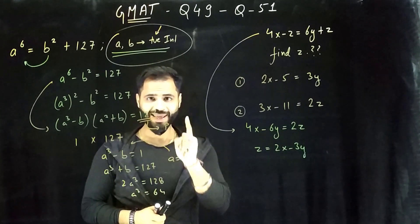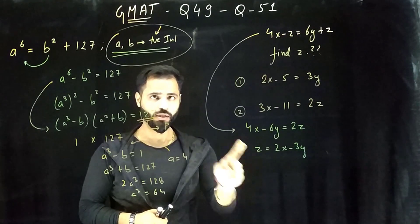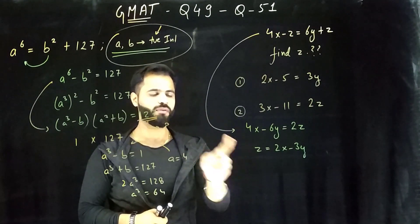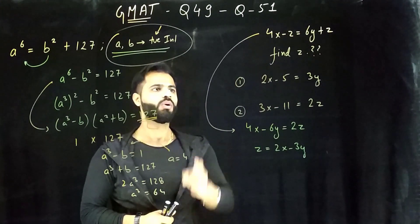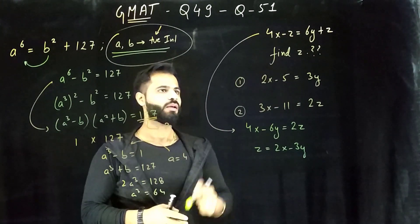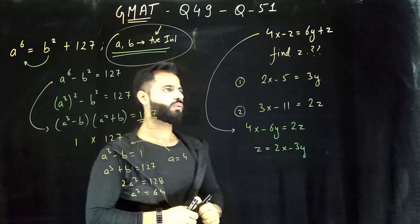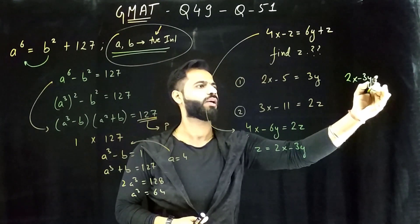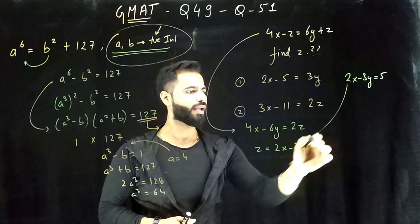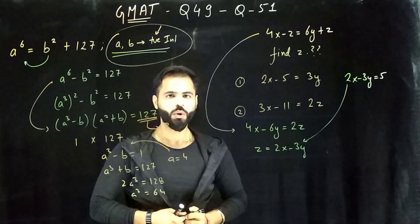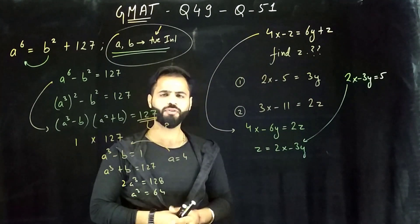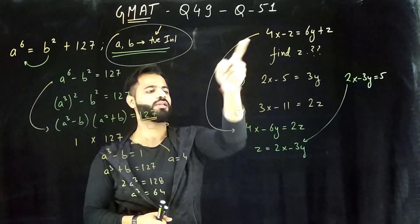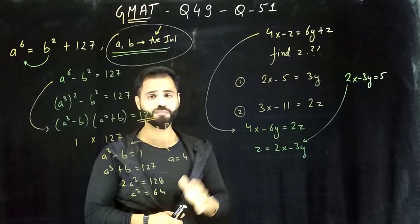Now I don't need x and y to give the value of z. Even 2x minus 3y value can help me find out z. Let's go to the option statement. First, it says 2x minus 5 equals 3y. This will give me 2x minus 3y equals 5. And I can find out z, which is equals to nothing but 5. But I could not have guessed that if I won't have written this in this format. And this is the simplest of them all.